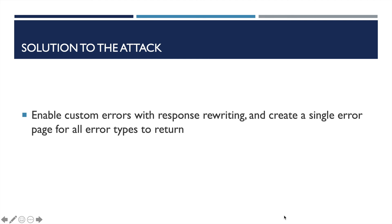So, how can we prevent padding oracle attacks? The most common solution is to enable custom errors with response rewriting and create a single error page for all error types. Therefore, it will return the same status code and responses in all three cases. The key to this method is to hide what exact server error has occurred from the attacker. In this way, the attacker will have no idea whether their manipulated key is causing an error or if it is passing through successfully. Therefore, they would not be able to exploit the web page anymore.